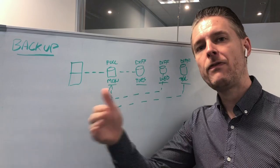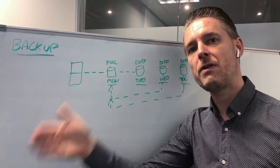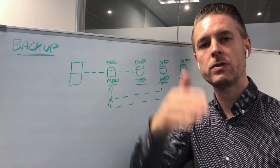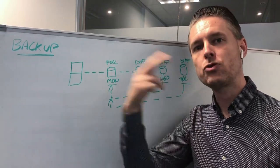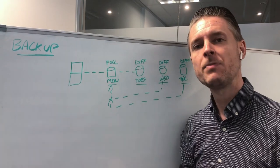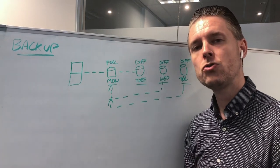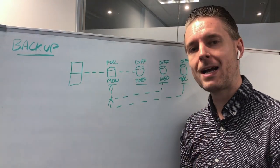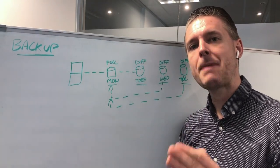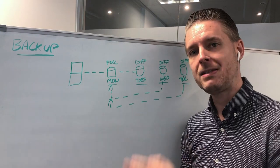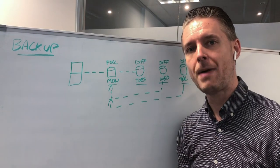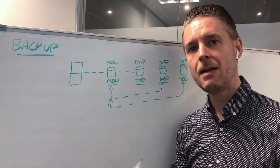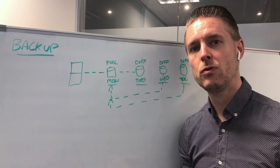In summary: the full backup is the first initial backup and any subsequent scheduled full backups. The incremental always references the last full, and every further incremental references the last incremental — this resets when the next full takes place. The differential references only the last full backup, backing up only the changes made since that last full.